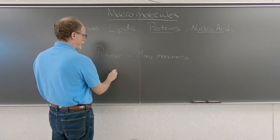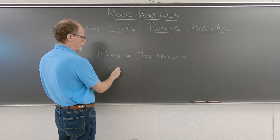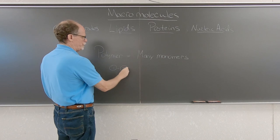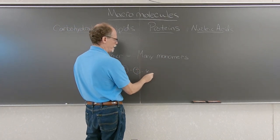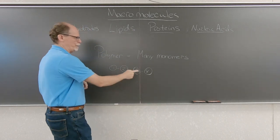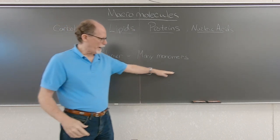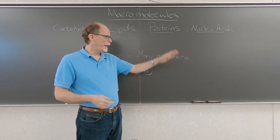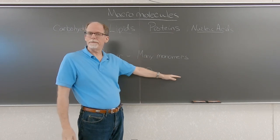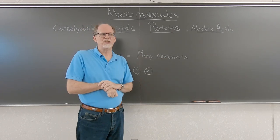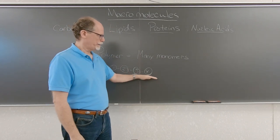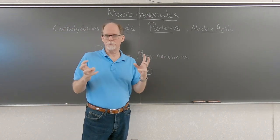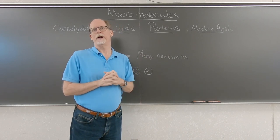Like you have a monomer number one linked to monomer number two, linked to monomer number three, linked to monomer number four. And then you can have five, six, seven, eight. If it's DNA, you can have 260 million monomers all stuck together to make one chromosome found in DNA.